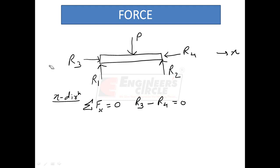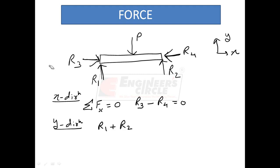Considering this as the X axis and this as the Y axis, R3 is positive because it is acting in the positive direction of the X axis, and R4 is negative because it is acting in the negative direction of the X axis. Similarly, summing forces in the Y direction: R1 plus R2 are taken positive as they act in the positive Y direction, minus P, which is negative as it acts in the negative Y direction, must equal zero.